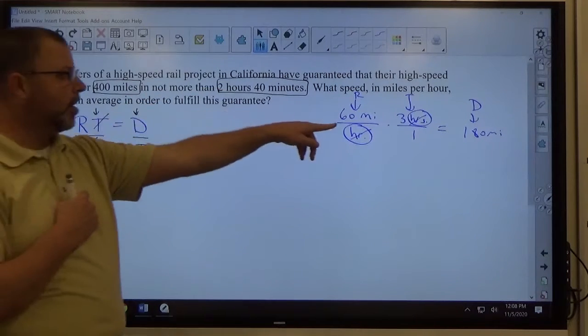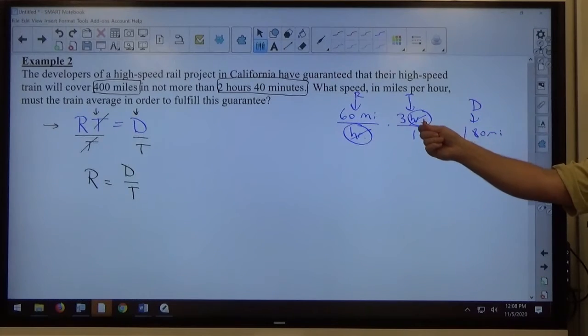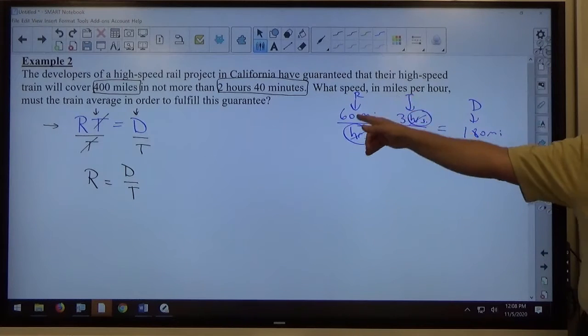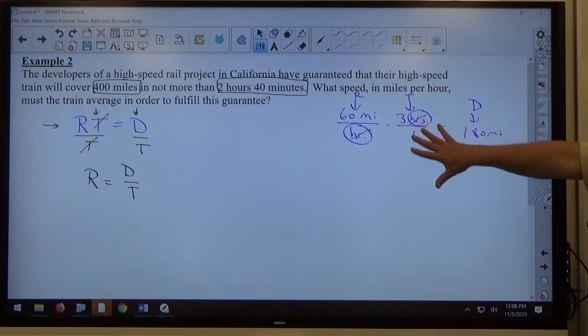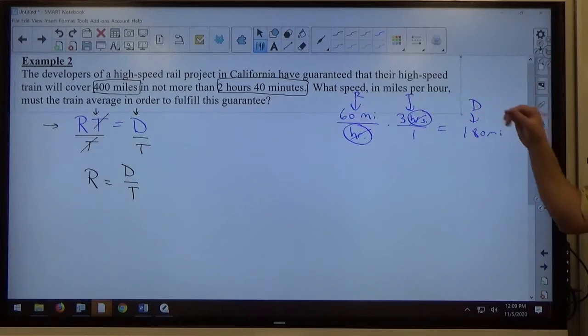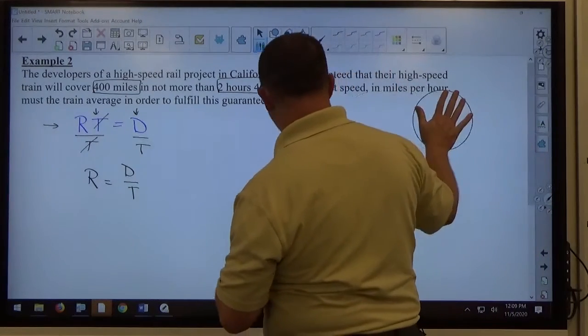Looking back at my specific example here, if I take 180 miles divided by 3 hours, I get 60 miles per hour. So distance divided by time equals rate is another way of looking at the rate times time equals distance formula. Okay, this was just generated out of my brain. This has nothing to do with the problem at hand. I was just showing you how the formula works. Okay, so I'm going to erase this so it doesn't confuse anybody.